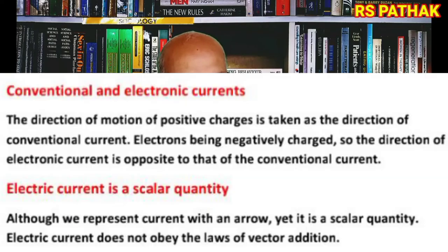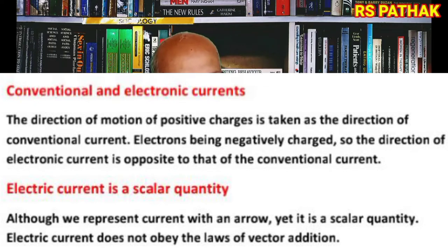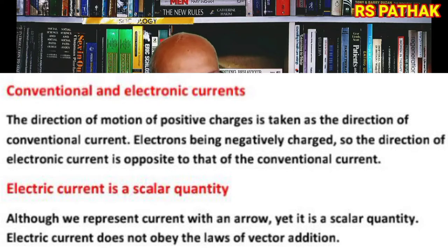What is the difference between conventional current and electric current? The direction of motion of positive charges is taken as the direction of conventional current. Electrons being negatively charged, the direction of electronic current is opposite to that of conventional current.